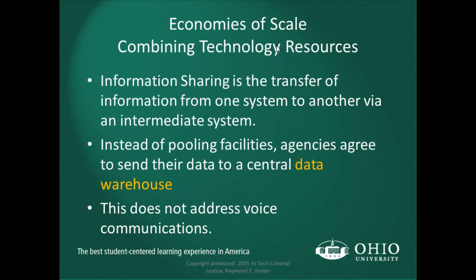Information sharing is the transfer of information from one system to another via an intermediate system. Agencies agree to send data to a central data warehouse or central system. This does not so much address communications directly, but the MARCS system in Ohio is one way of addressing that aspect.